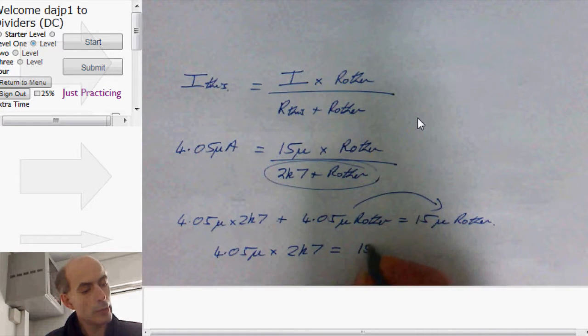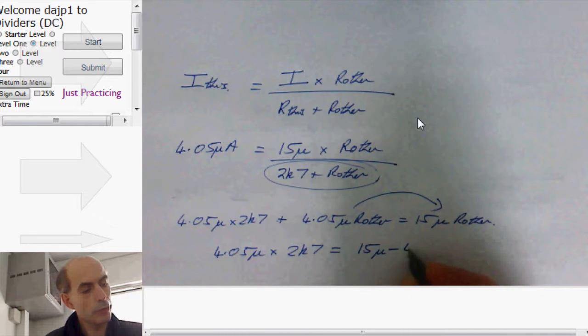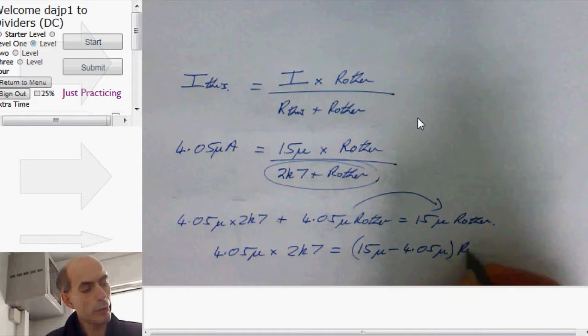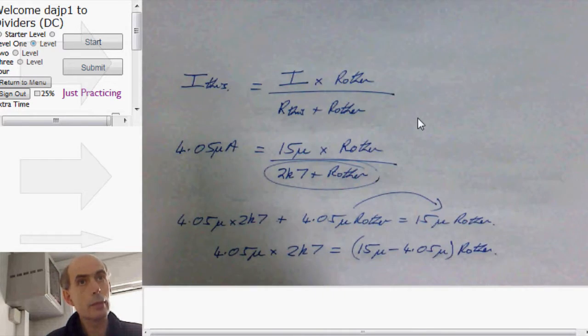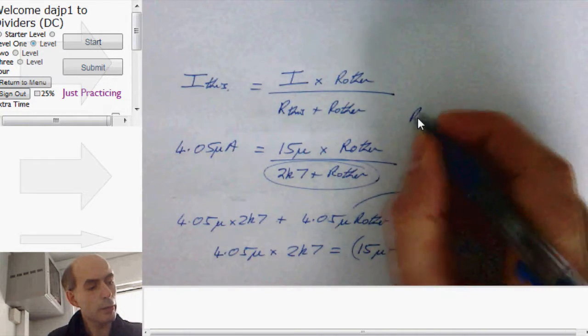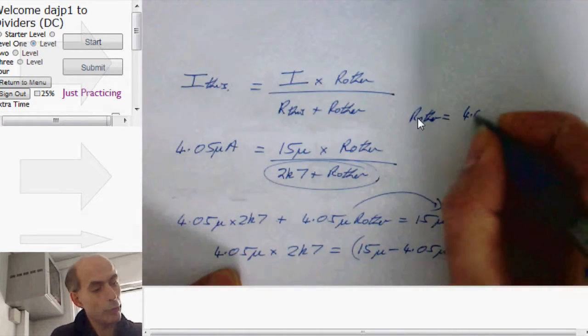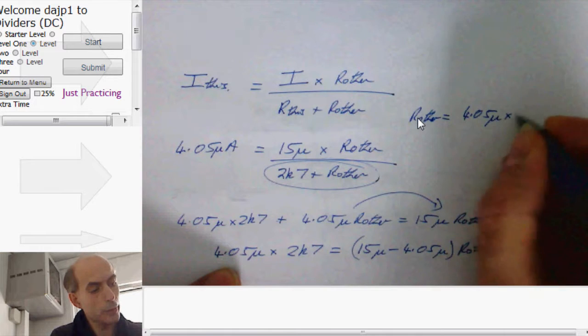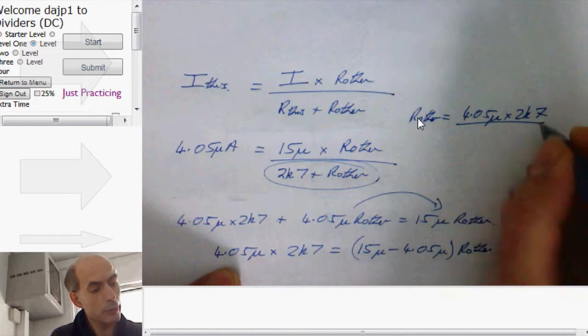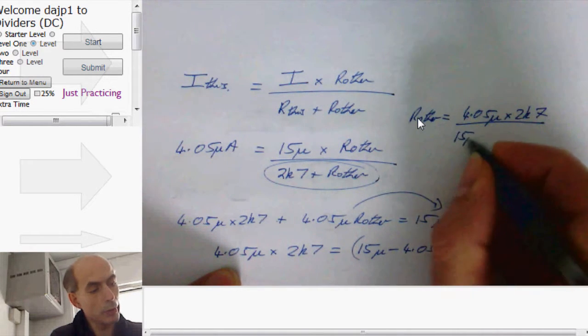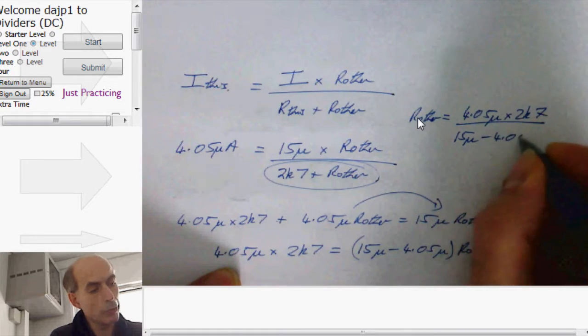15 micro minus 4.05 micro times R other. In other words, R other is just 4.05 micro times 2k7 divided by 15 micro minus 4.05 micro.